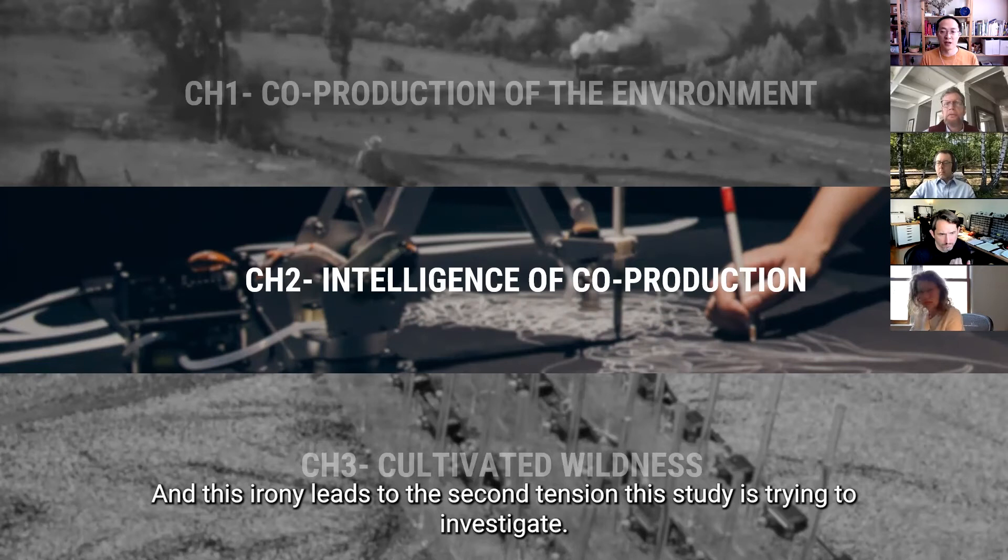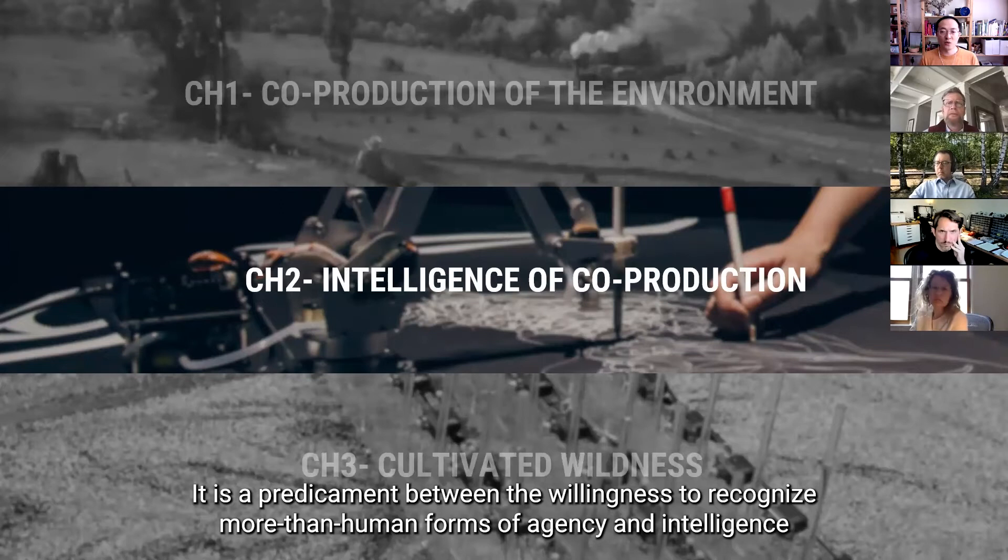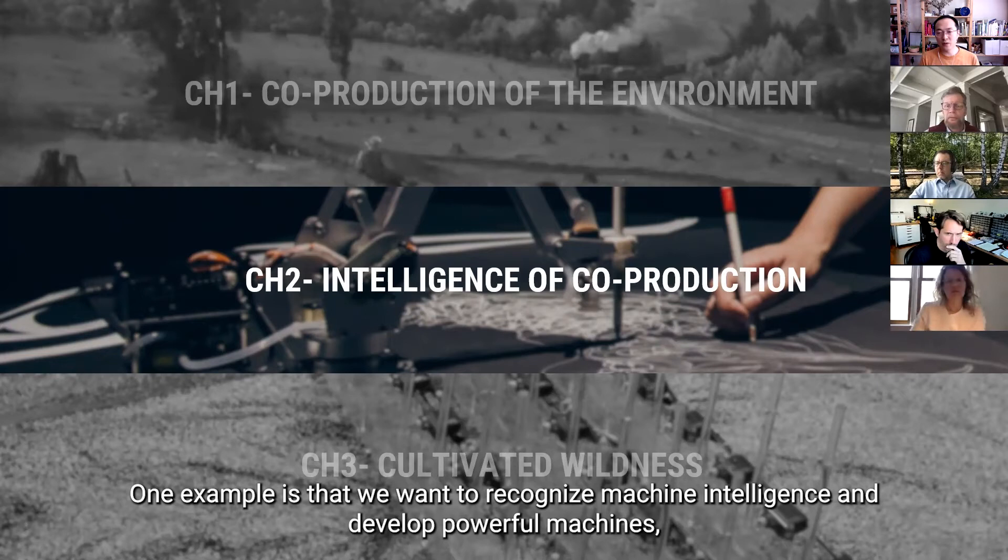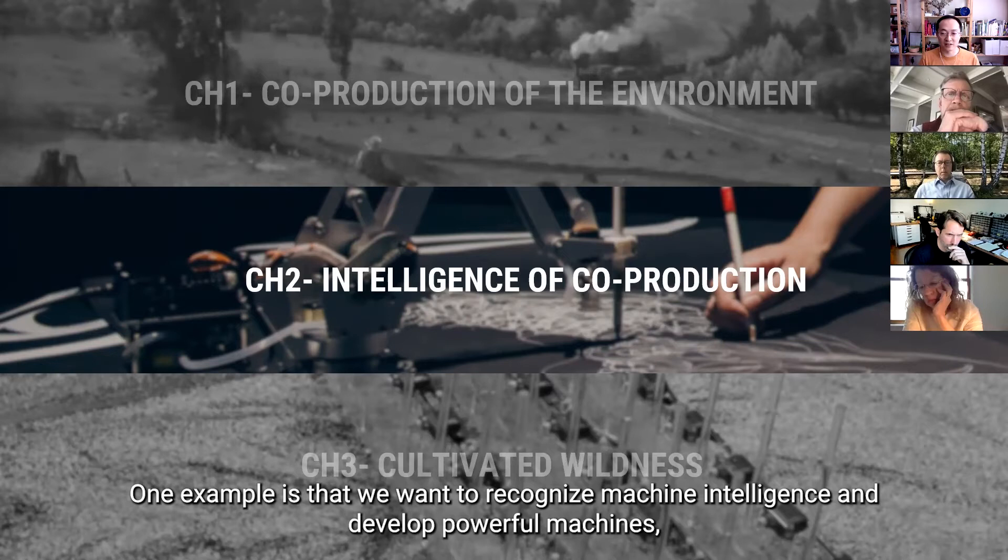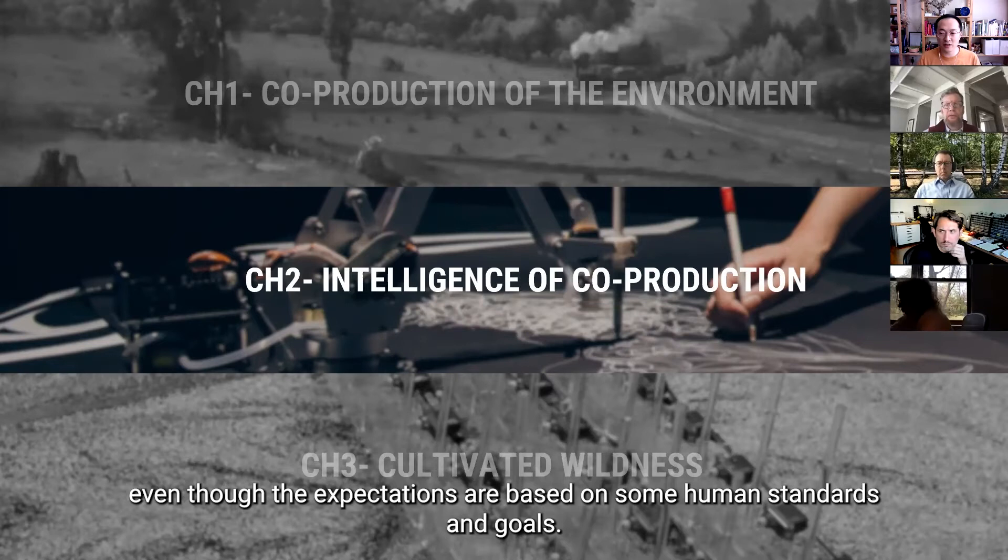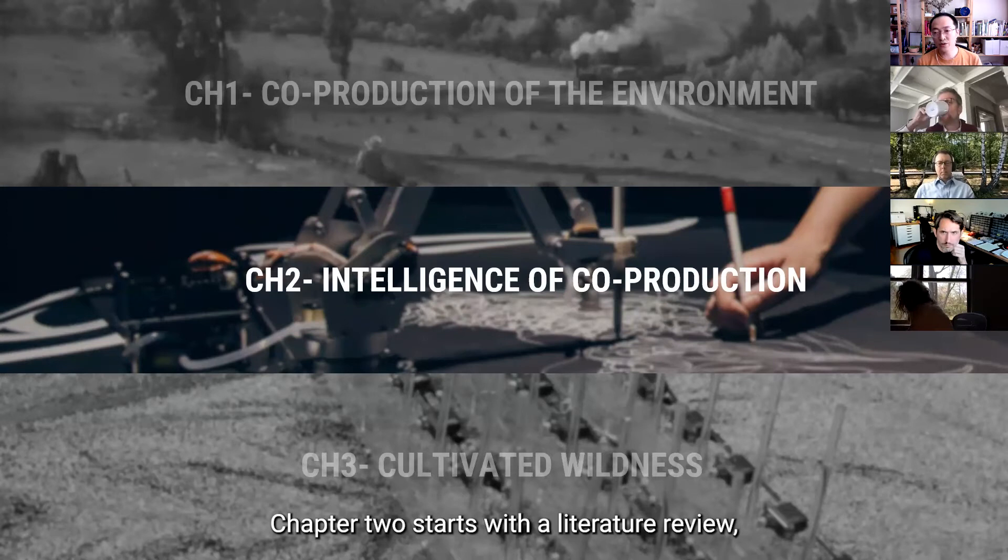And this irony actually leads to the second tension in this study I'm trying to investigate. It is the predicament here, a predicament between the willingness to recognize more than human forms of agency and intelligence, and the inability to surpass all-too-human frames and vocabularies. And one example I can think of is that we want to recognize machine intelligence and develop powerful machines. But deep down, we always have this fear of an AI gone rogue. We fear that they will behave unexpectedly, even though the expectations are based on human standards and goals.